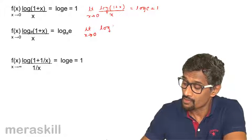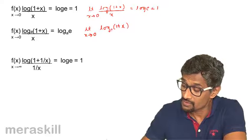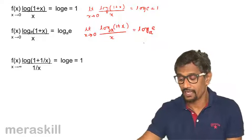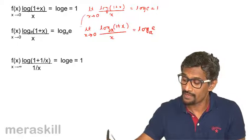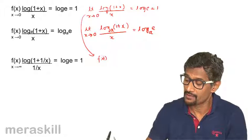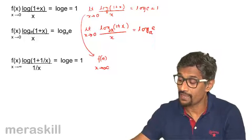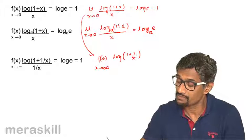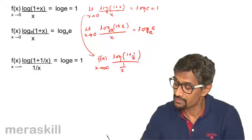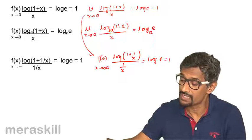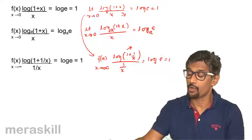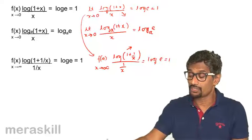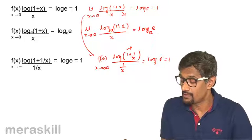The limit as x → 0 of log(1 + x) to base a, divided by x, equals log e to the base a. An offshoot of this is the limit as x → ∞ of log(1 + 1/x) / (1/x), which also equals log e to the base a = 1. So these two forms essentially mean the same thing.